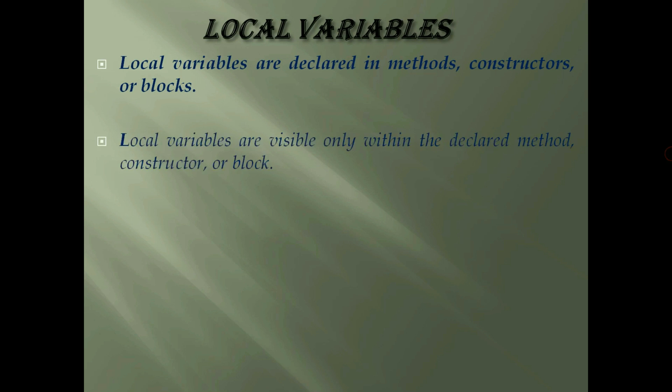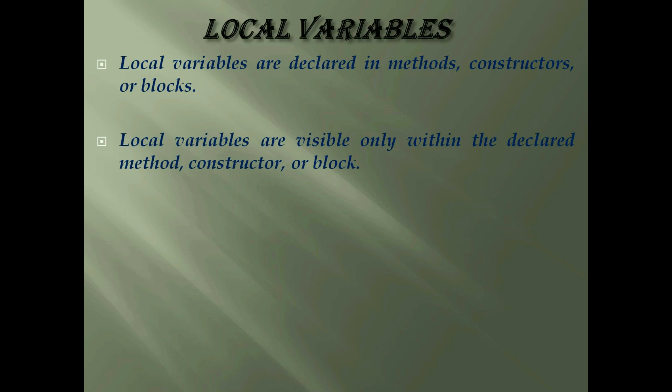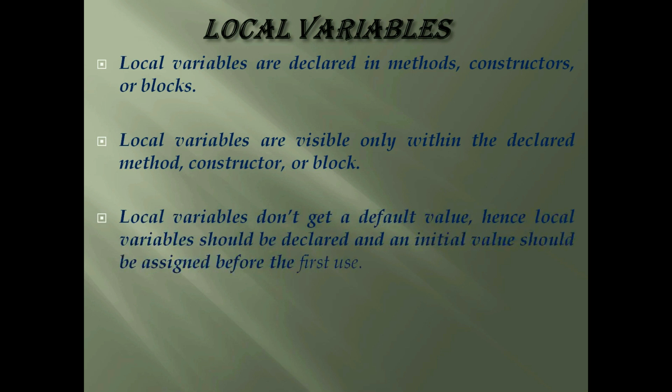What are the local variables? Local variables are declared in methods, constructors or in blocks. Local variables are visible only within the declared method, constructor or block. Local variables are created when the method, constructor or block is entered and the variable will be destroyed once it exits. Local variables don't get a default value. Hence, local variable should be declared and an initial value should be assigned before the first use. Access modifiers cannot be used for local variables. Final is the only non-access modifier that can be applied to local variables.